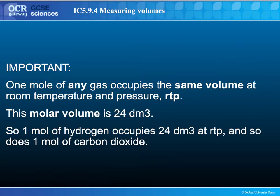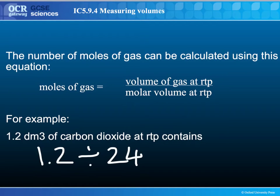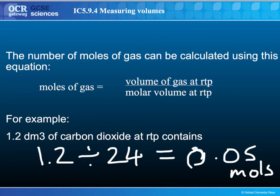Really importantly: one mole of any gas at room temperature and pressure takes up 24 litres. So one mole of carbon dioxide occupies 24 litres, as does one mole of hydrogen, one mole of oxygen, and one mole of any gas whatsoever. You can use that information to calculate the number of moles of gas you have. Take the volume of gas collected at room temperature and pressure and divide it by the molar volume — i.e. 24. So if you've got 1.2 litres and divide by 24, that gives you 0.05 moles of carbon dioxide gas in this reaction.